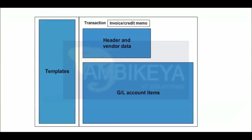You can easily create and post vendor invoices or credit memos using a one-screen transaction. This type of invoice entered directly in Accounts Payable is a miscellaneous invoice without reference to a purchase order. The Accounts Payable Entry screen is divided into the following areas. Work Templates: here you can select screen variants, account assignment templates, or held documents as references.